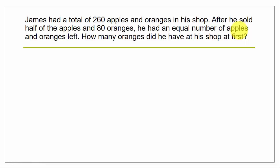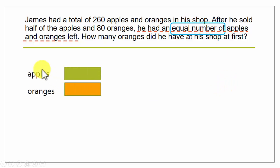So we know what is at the end because there is a reference. We start from the end. He had an equal number of apples and oranges left. We start from there, and because they are equal numbers we could draw boxes of the same size for both apples and oranges.